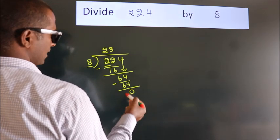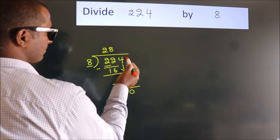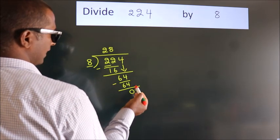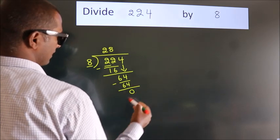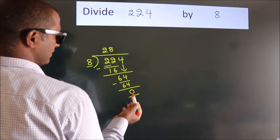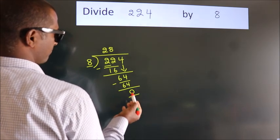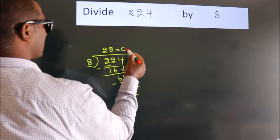After this, no more numbers to bring down. We got remainder 0. So, this is our quotient.